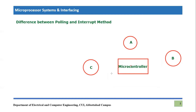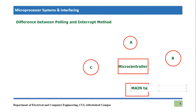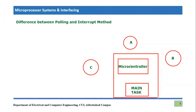The interrupt method is totally different. In the interrupt method, the microcontroller is already working on something — which you can call the main program or main task. It is busy with that specific task, so the main task is ongoing in the domain of the microcontroller.